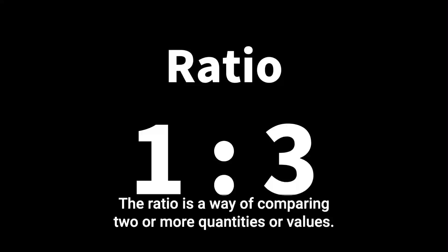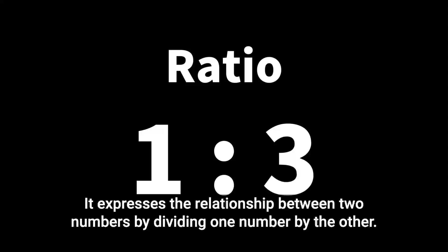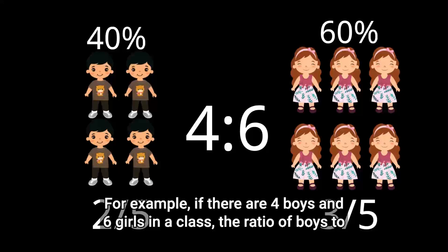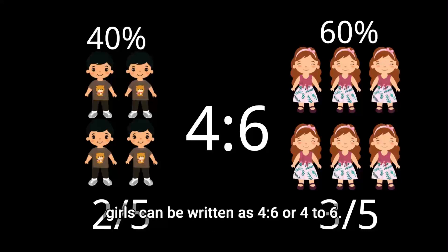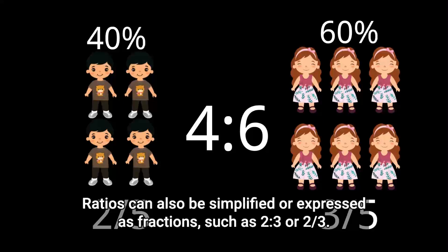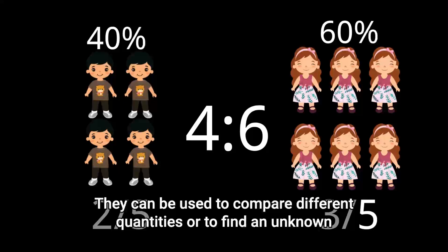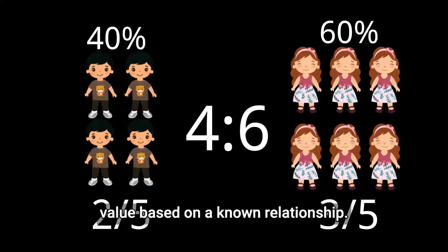A ratio is a way of comparing two or more quantities or values. It expresses the relationship between two numbers by dividing one number by the other. Ratios can be written in several ways, such as using a colon or the word 'to'. For example, if there are four boys and six girls in a class, the ratio of boys to girls can be written as four to six. Ratios can also be simplified or expressed as fractions, such as two to three or two-thirds. Ratios are used in many different areas of math and everyday life, such as cooking, finance, and sports, and they can be used to find an unknown value based on a known relationship.